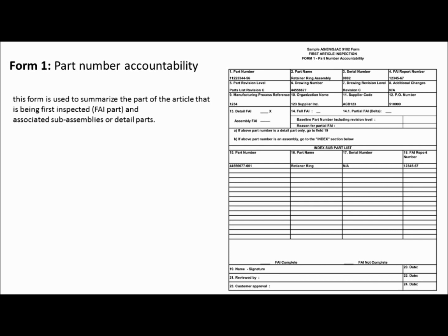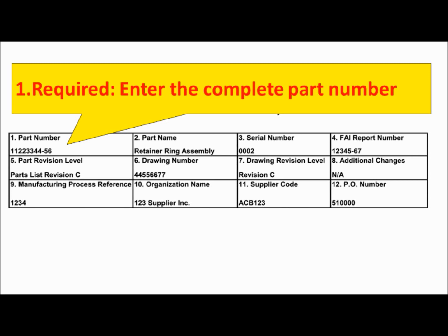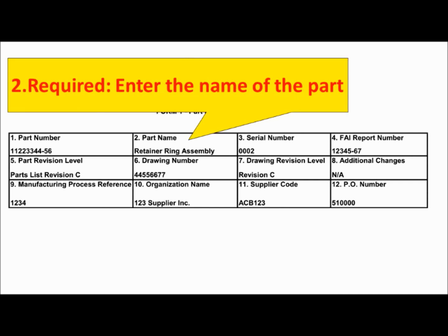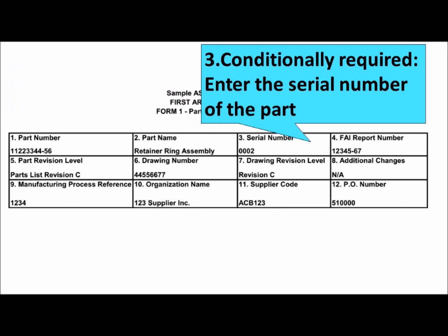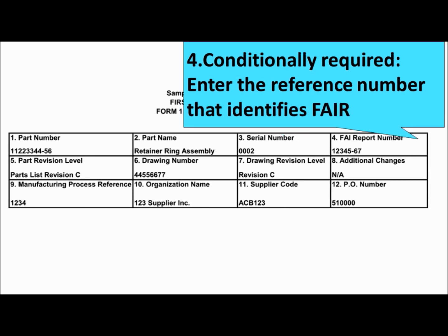In Form 1: Field 1 is required — please enter the complete part number. Field 2 is required — please enter the name of the part. Field 3 is conditionally required — please enter the serial number of the part. Field 4 is conditionally required — please enter the reference number that identifies the FAIR.